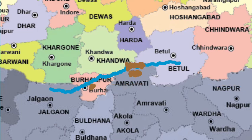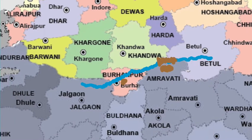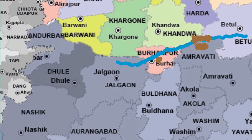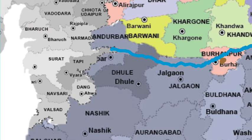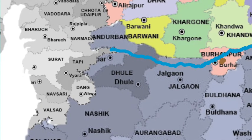As the river Tapi enters into the state of Maharashtra, it flows from the district of Jalgaon and then enters the district of Dhule. Thereafter it enters the state of Gujarat through the Tapi district and flows into the districts of Surat, ultimately discharging into the Gulf of Khambhat.